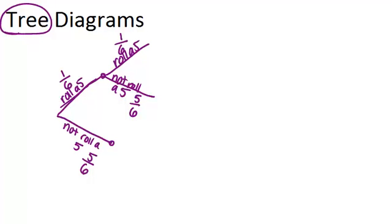Same thing below. It will look exactly the same as this, just copied down here. If we didn't roll a 5 at first, on the second roll, we could either roll a 5 or not roll a 5. And the probabilities would be 1 sixth and 5 sixth.